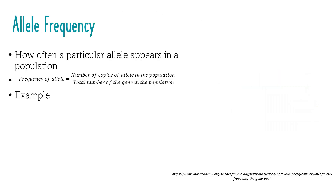Allele frequency is a way to measure how often a particular version of an allele appears in a population. To find the allele frequency, we can use the following formula: the frequency of an allele is equal to the number of copies of the allele in the population, divided by the total number of genes in the population.